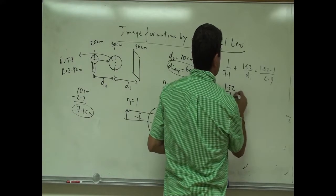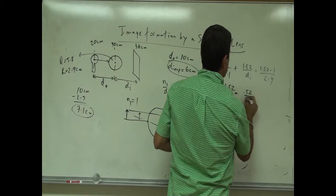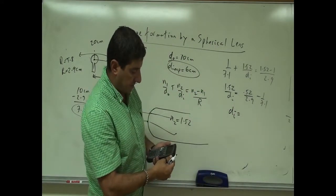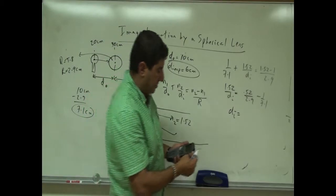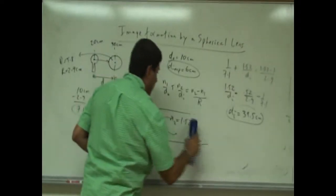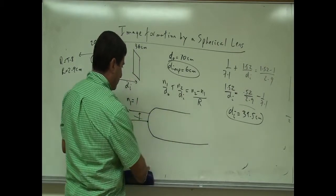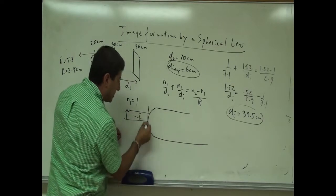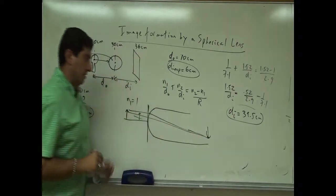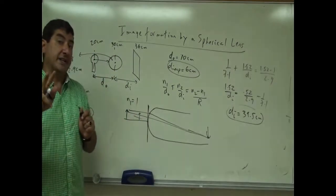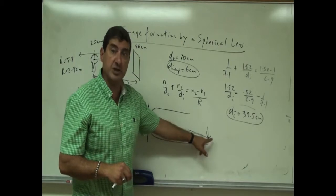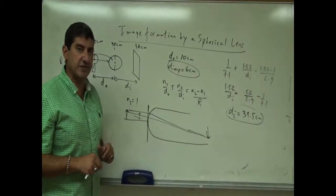Calculating: 1.52/DI = 0.52/2.9 − 1/7.1. DI comes out positive at 39.5 centimeters. That means the light rays were able to bend and actually formed an image in the glass itself — 39.5 centimeters from the front end of the spherical lens. But that image would never form in reality; this is assuming the glass goes on forever.